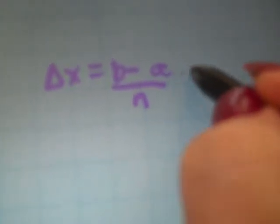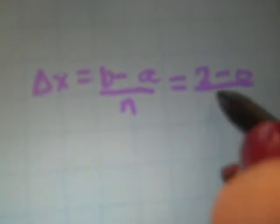We need to first of all find out what our delta x is. Our delta x is b minus a over n. b and a are the endpoints of the interval which are 2 minus 0 over the number of rectangles we want are 4. So the width of each rectangle is 1 half.